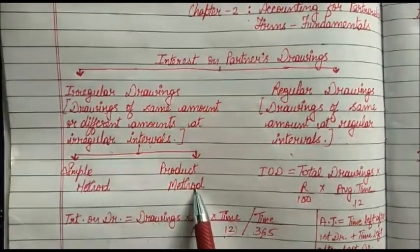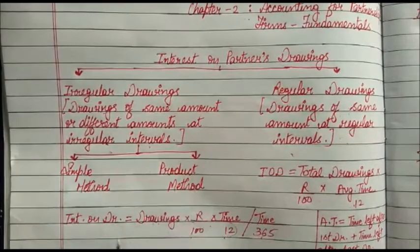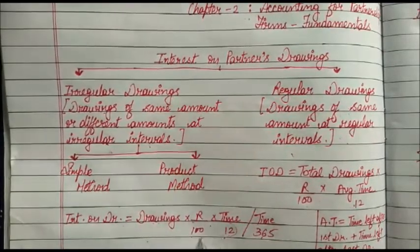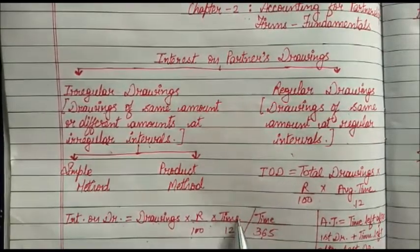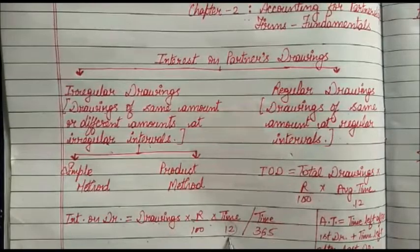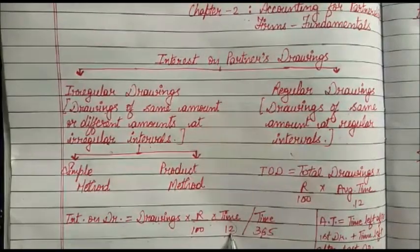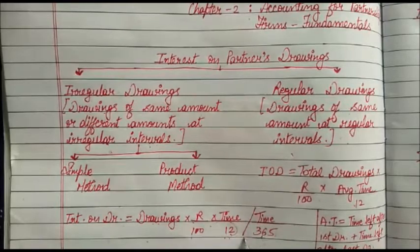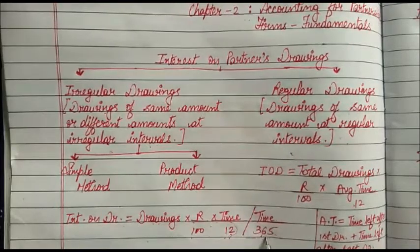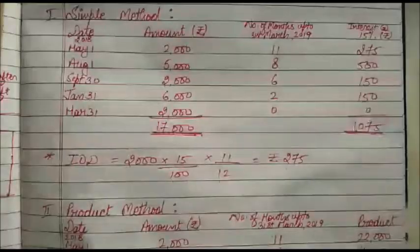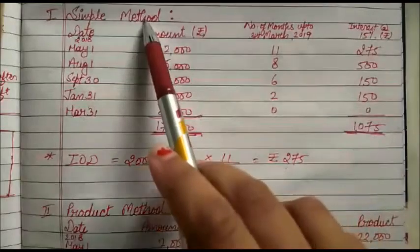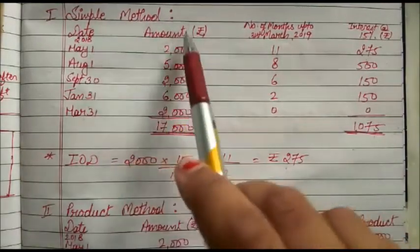The formula for interest on drawings is: Drawings × Rate/100 × Time/12, where 12 is used when the period is in months. If the period is in days, we divide by 365. Now we take an example for the simple method.